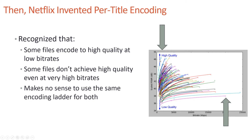So it makes no sense to use the same encoding ladder for both. One encoding ladder could peak at 2.5 megabits per second with very high quality, while another might go up to 10 megabits per second to get as good quality as possible. Using the same encoding ladder for both types of files simply doesn't make sense.